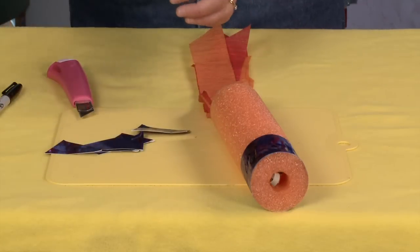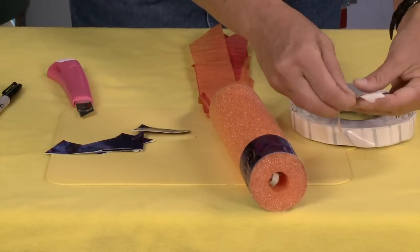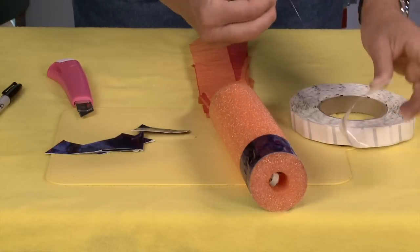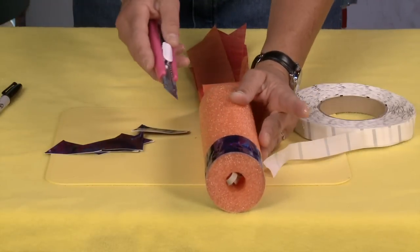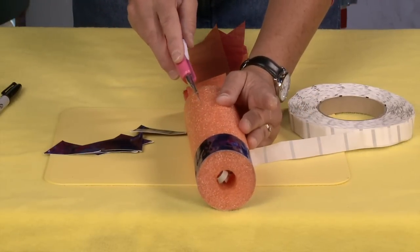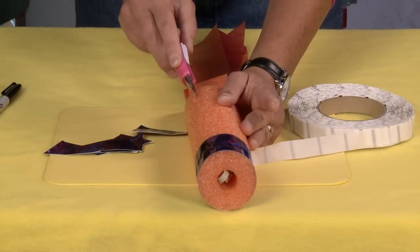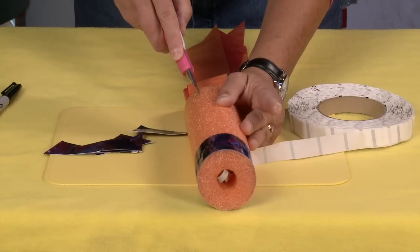Now if you want to you can use hot glue at this stage. But because pool noodles are prone to melting with hot glue I like to use just a glue dot. I'm just gonna use my Xacto knife here and I'm just gonna cut a little slit. And then I'm going to open it up.